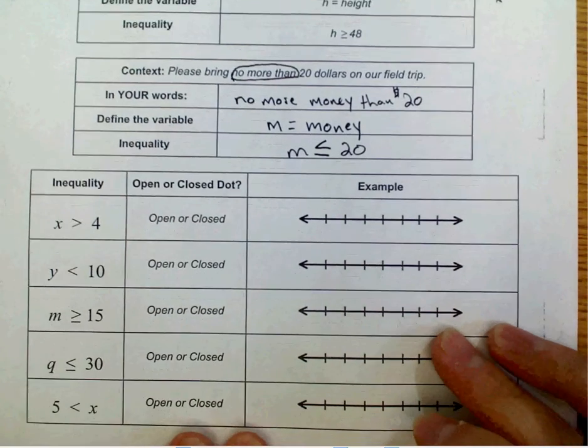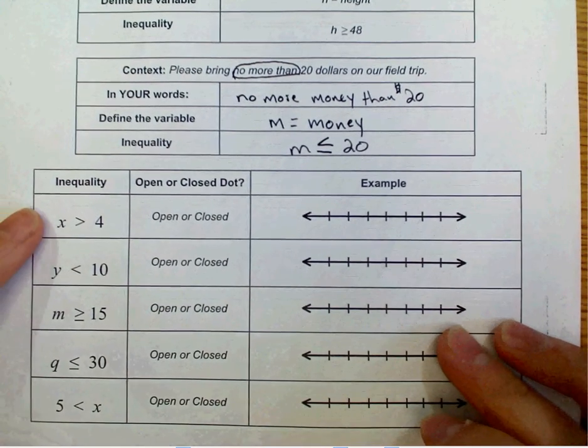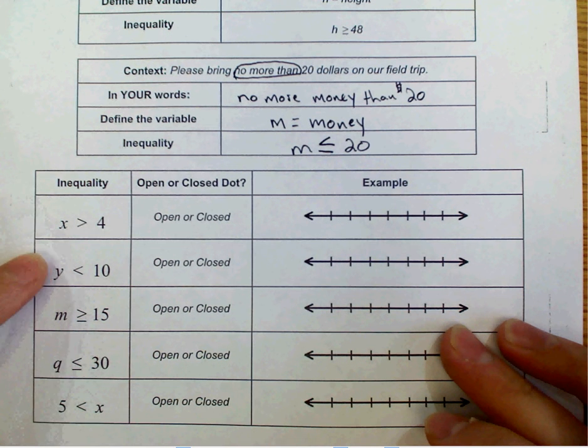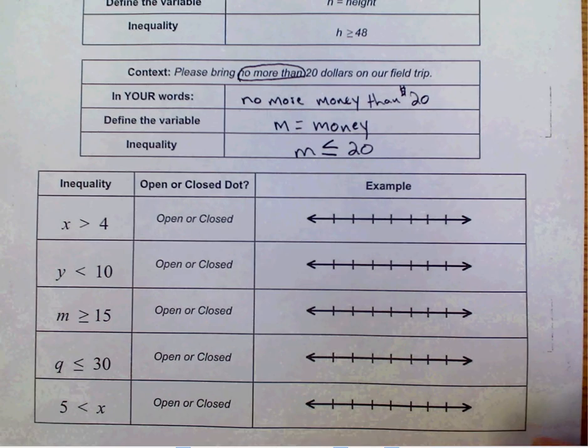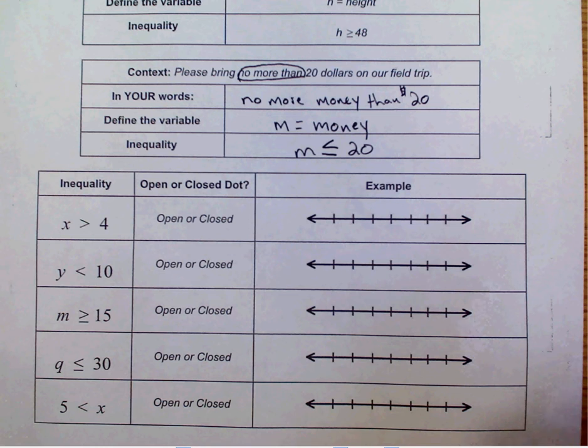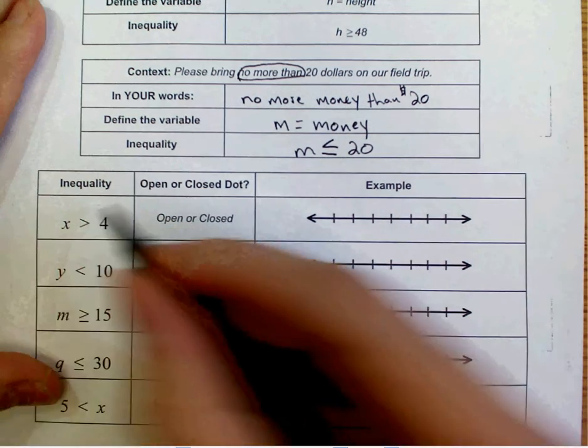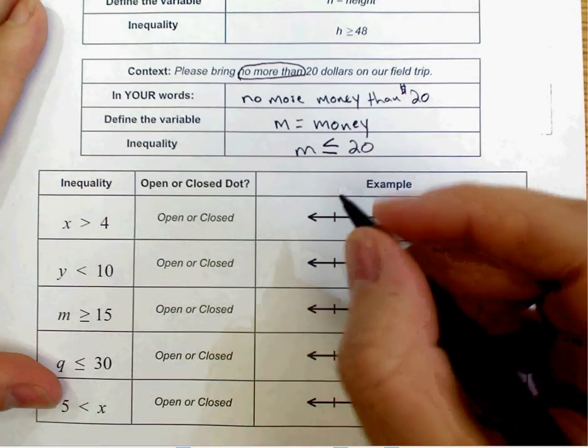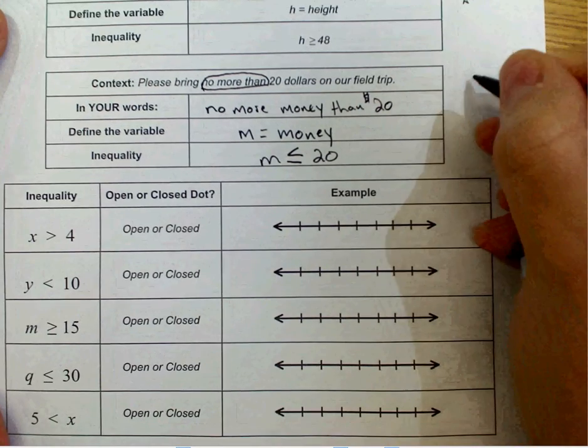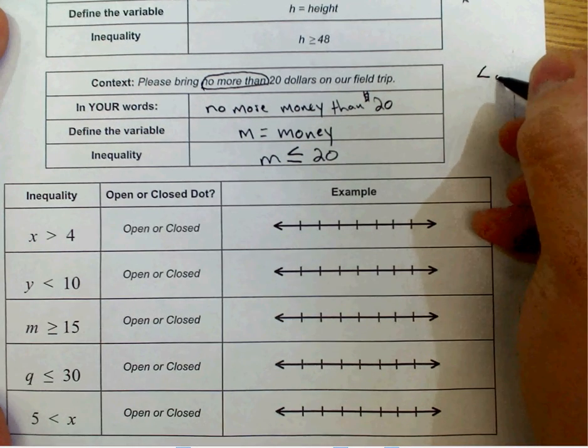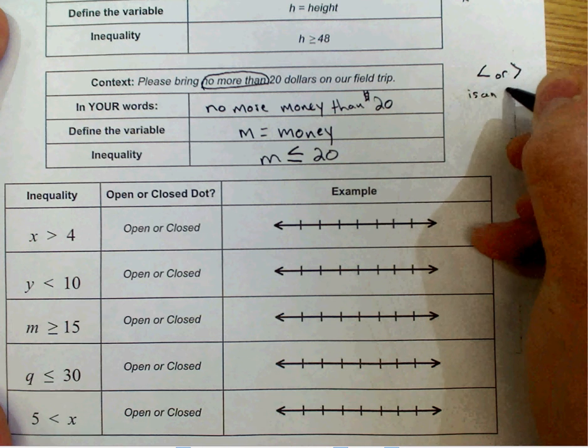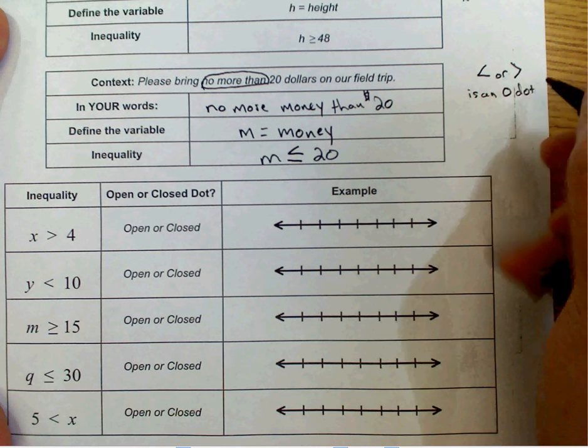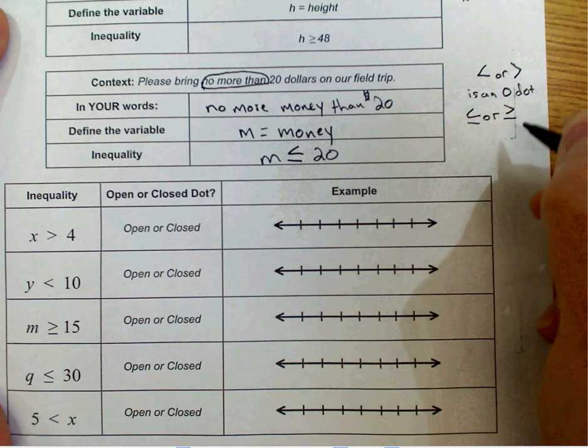So if we were to graph these situations, like X is greater than 4, Y is less than 10, M is greater than or equal to 15, Q is less than or equal to 30, and 5 is less than X, we do that on a number line with either an open dot or a closed dot, and an arrow. So whenever we have less than or greater than, it's going to be an open dot.